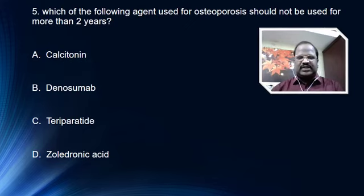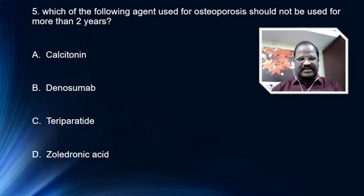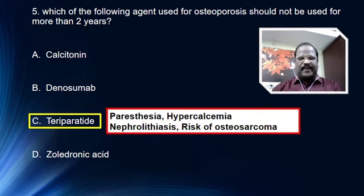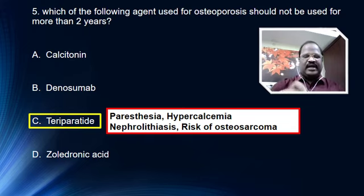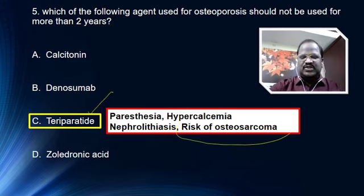Which of the following agents used for osteoporosis should not be used for more than two years? Options are calcitonin, denosumab, teriparatide, and zoledronic acid. The right answer is option C, teriparatide. Teriparatide can cause nephrolithiasis, and very importantly, if the drug is used for more than two years, there is risk of osteosarcoma.